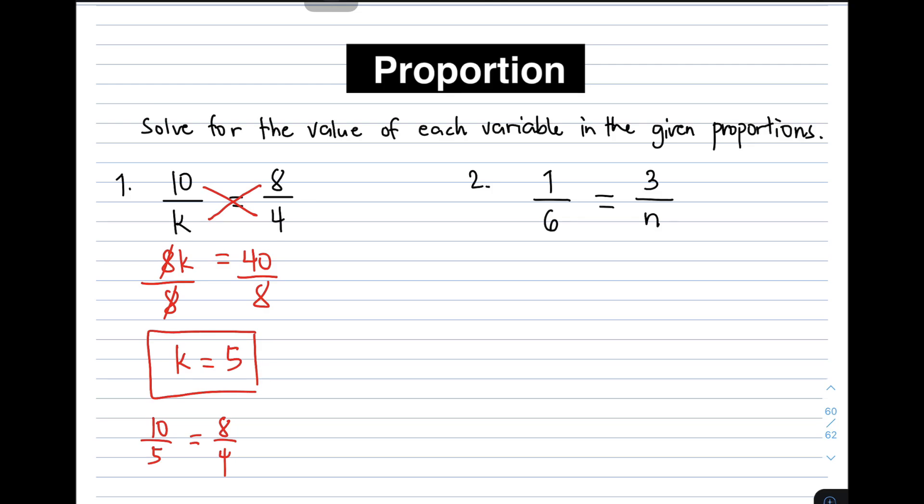Now, let's move on with item number 2. We are given 1 over 6 is equal to 3 over n. And then here, the given variable or the missing variable is variable n.